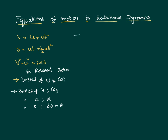Taking these things into consideration, we can rewrite our equations of motion. Similar to V equal to U plus AT, in rotational motion we write: final angular velocity omega-F equals initial angular velocity omega-I plus angular acceleration alpha multiplied by time T.